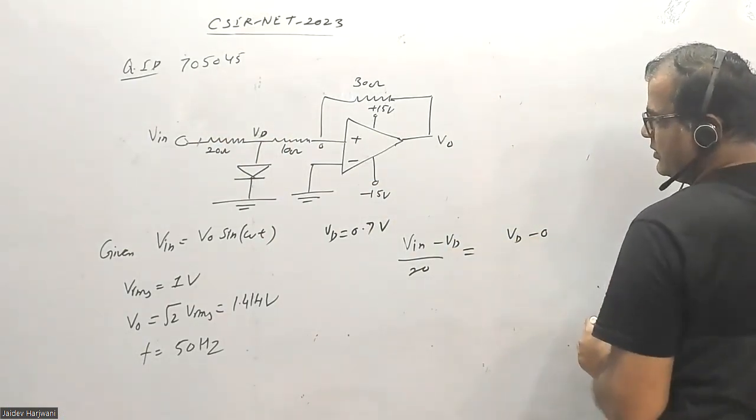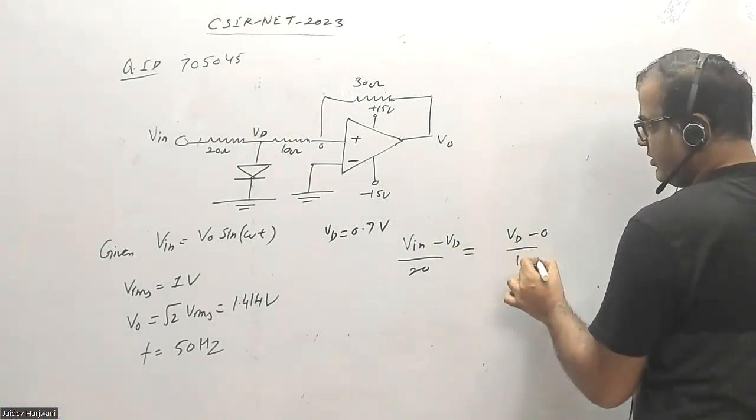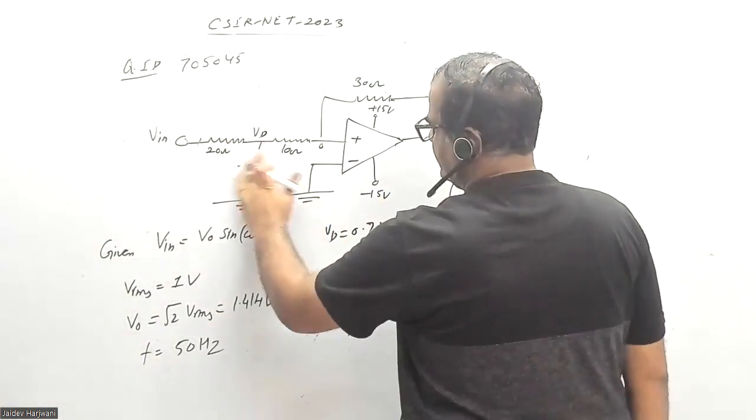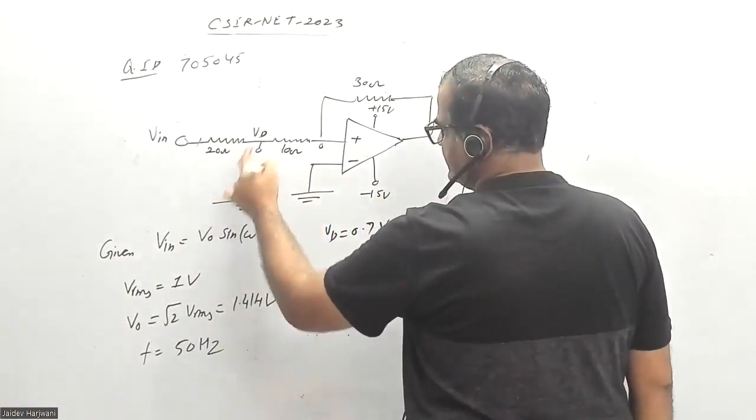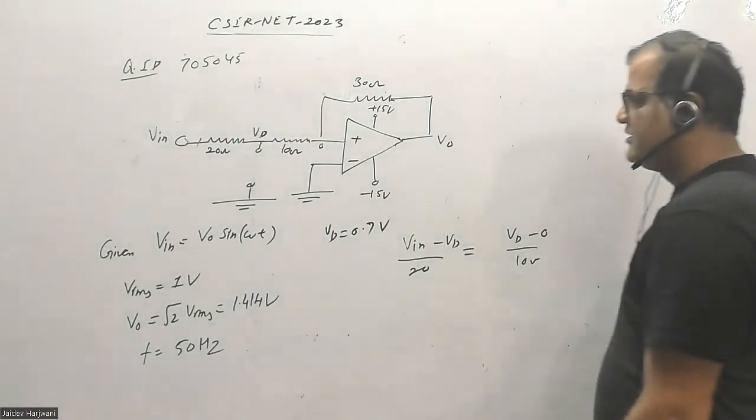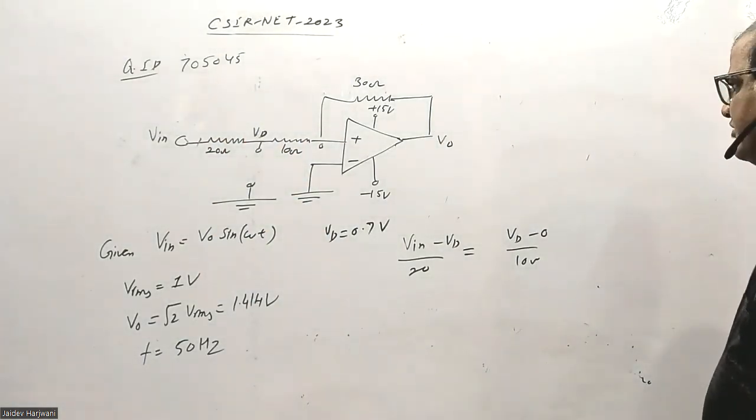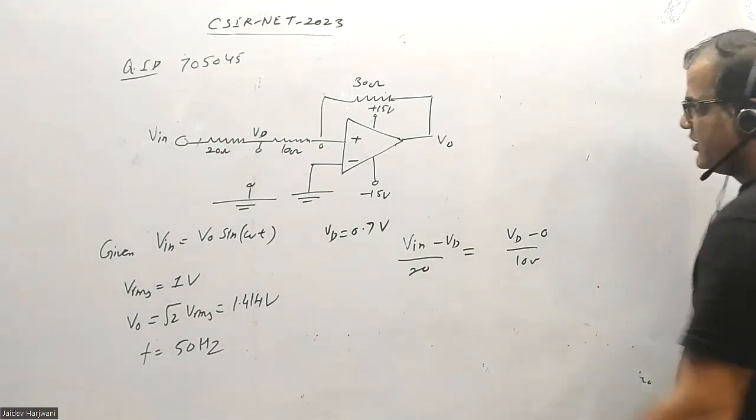So now this current should be equal to this current. So let us find what VD is. Cancel out now. V input is equal to minus VD plus 2VD, or 3VD equals V input.